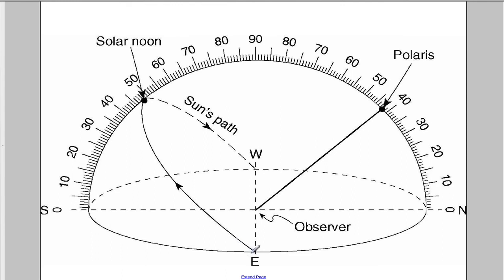We know that the sun is going to rise in the east, shown by the arrows, reach its highest point in the day here, and then sink down to the west.